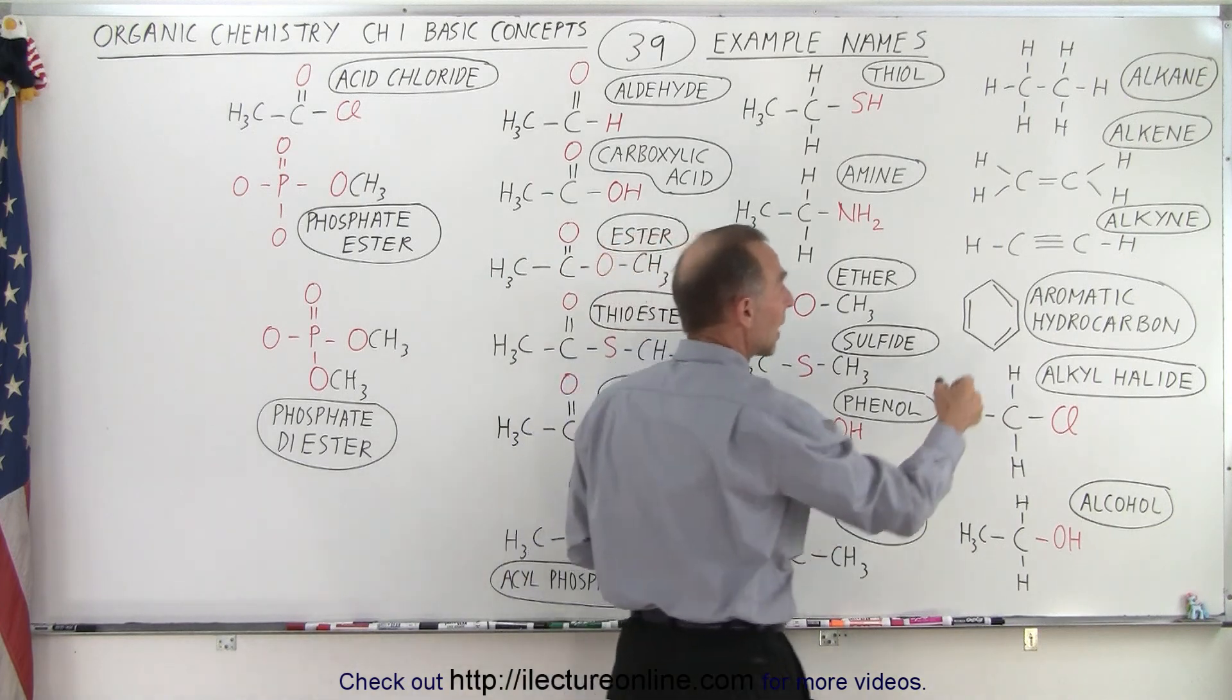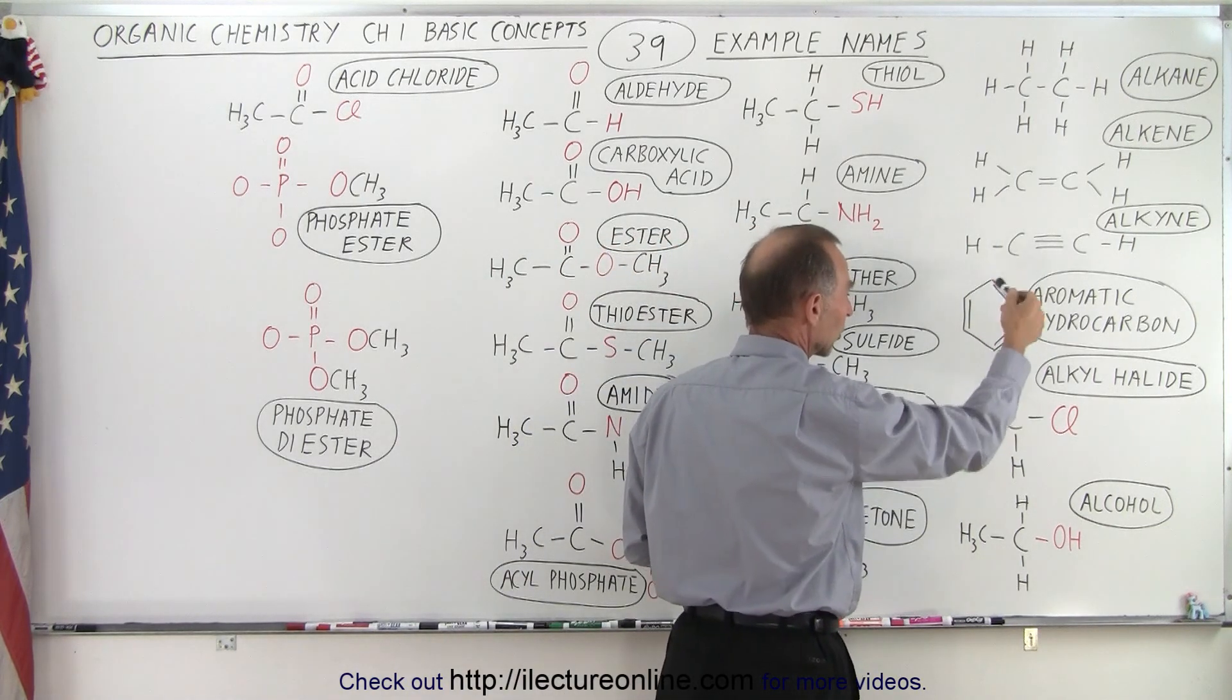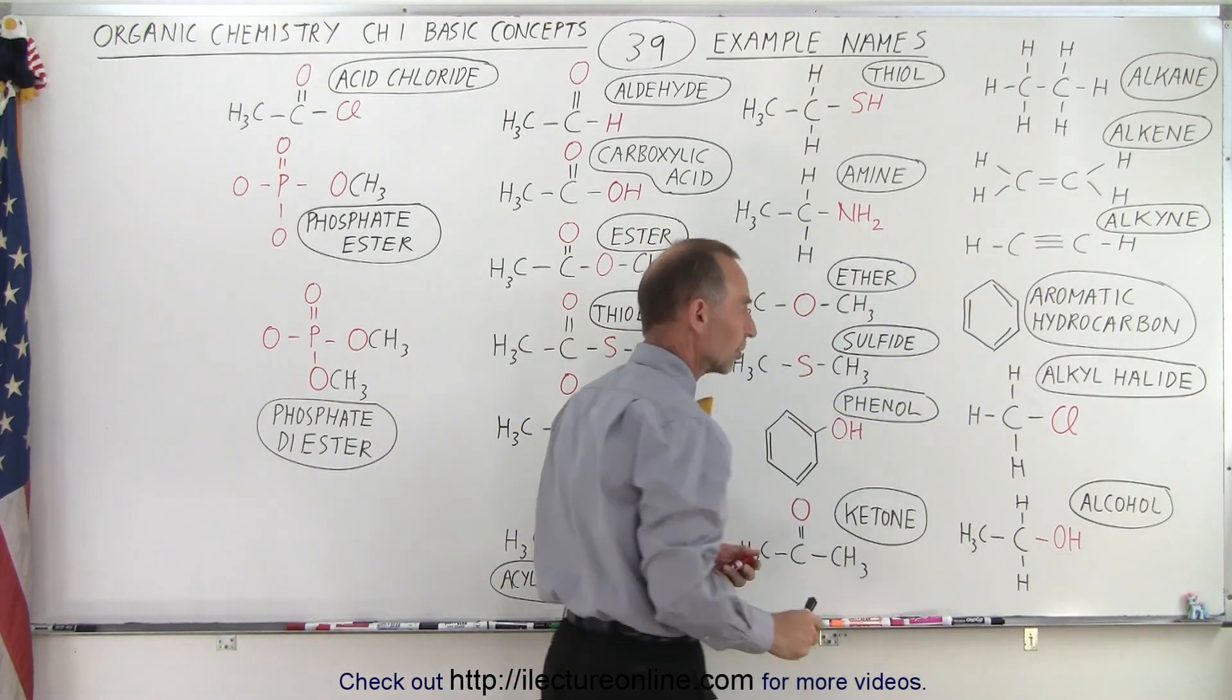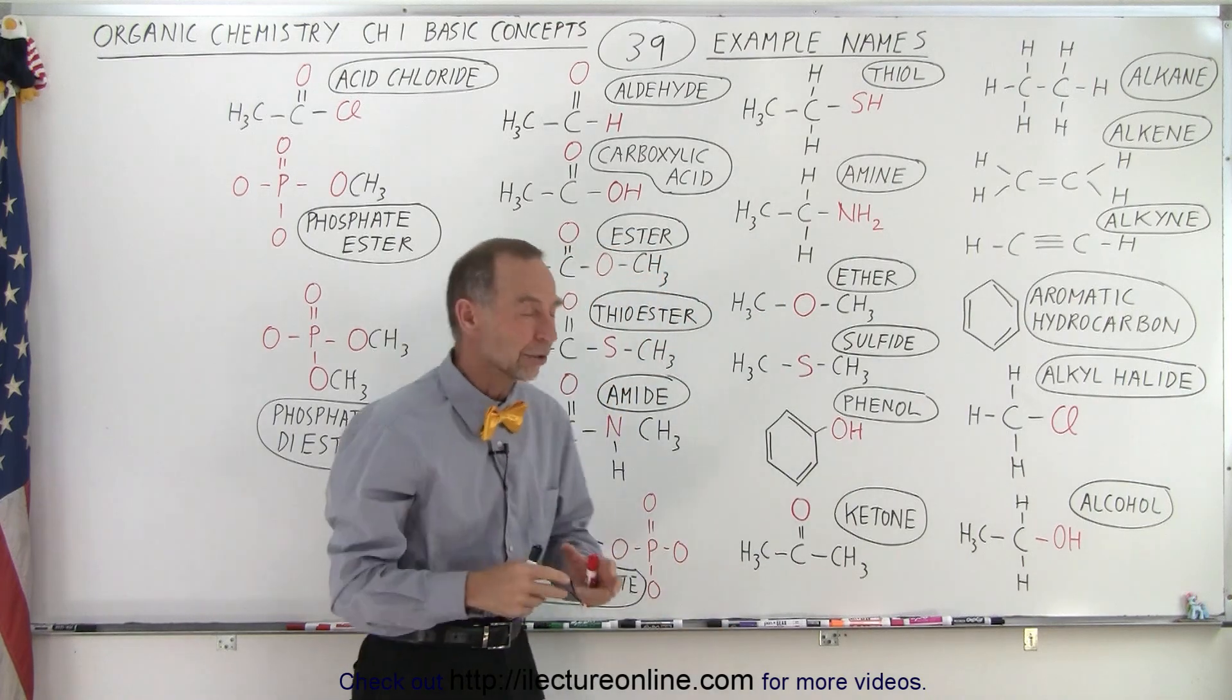Then we should recognize the aromatic hydrocarbons, the ones that have the six carbons in a circle and the alternating single and double bonds.